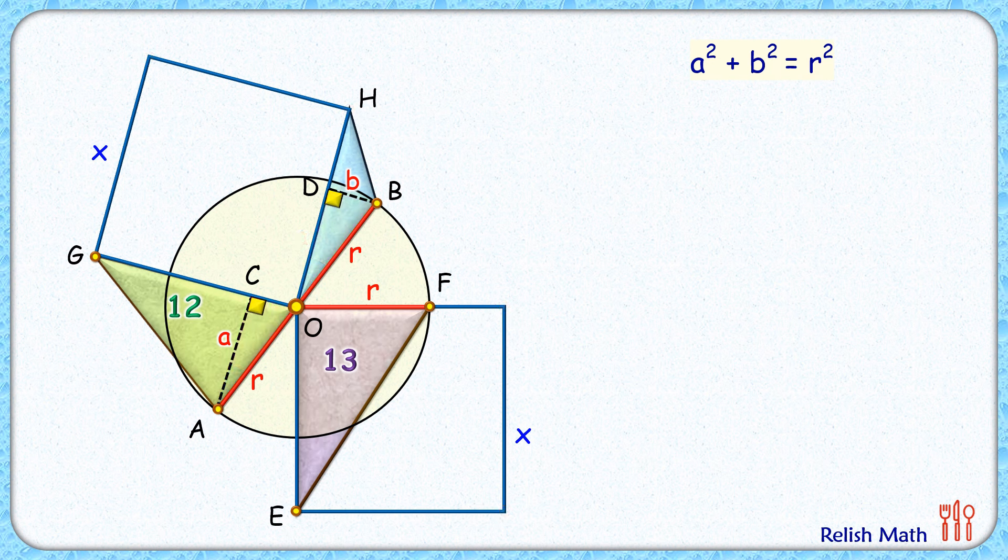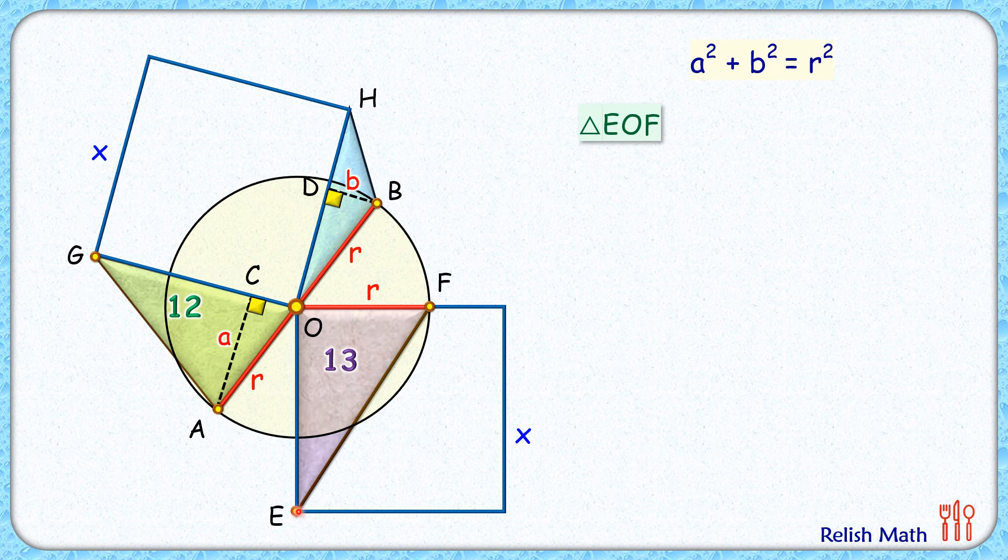Now let's check area of all these three triangles. Let's start with purple triangle. Its area is area of this triangle EOF is half of base into height. Now base is r cm, height is x cm. So half of r times x that's given as 13. From here we are getting r is 26 upon x.